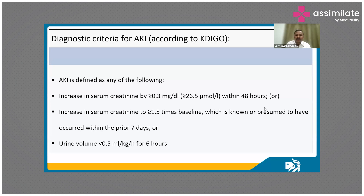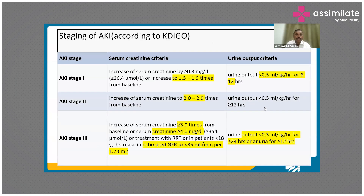We will look into various factors which influence these two parameters. KDIGO goes further — there is not just a definition; it also stages the AKI into three stages: AKI Stage 1, 2, and 3.